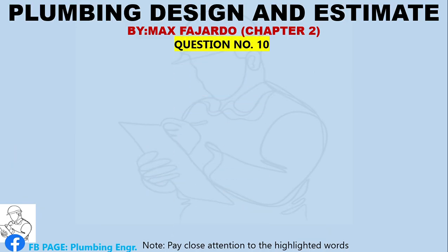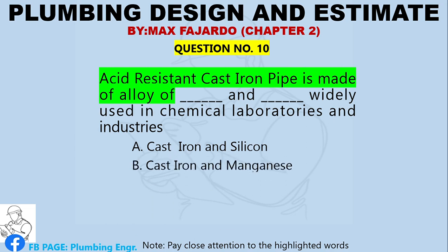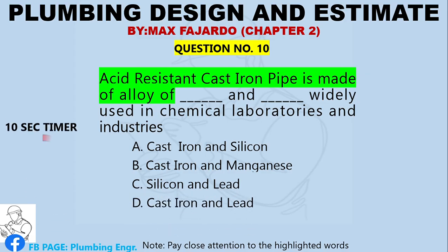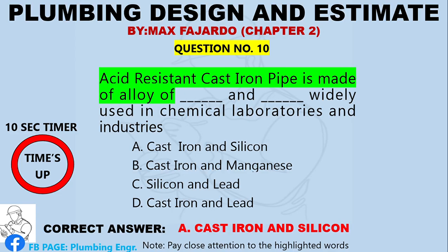Question Number 10. Acid resistant cast iron pipe is made of an alloy of blank and blank, widely used in chemical laboratories and industries. A. Cast iron and silicon. B. Cast iron and manganese. C. Silicon and lead. D. Cast iron and lead. Correct answer: Letter A, cast iron and silicon.